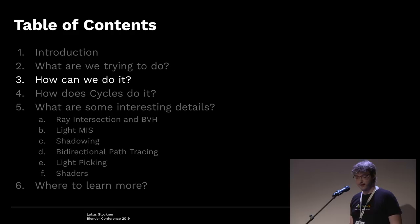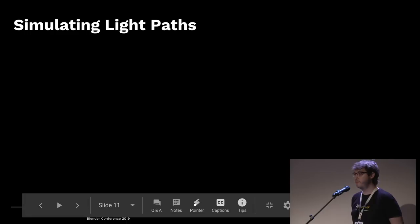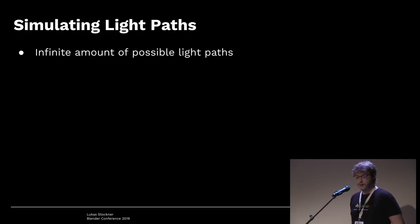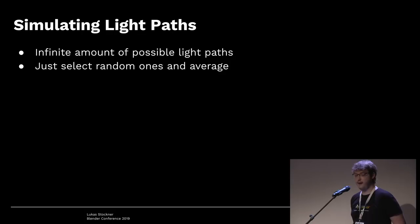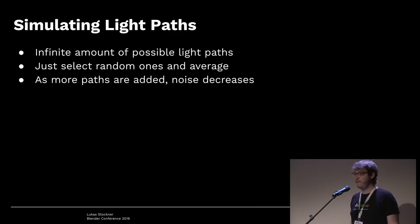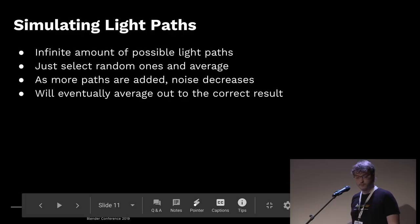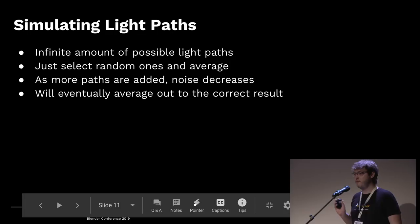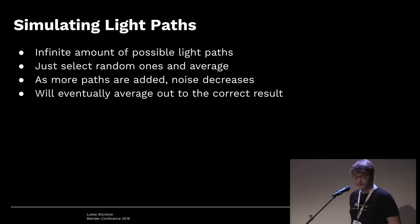So we want to simulate geometric optics. Geometric optics has this concept of light paths — light moves along straight lines. There are an infinite number of possible light paths so we can't simulate all of them. Instead, we select a lot of random light paths and average over them. Each path will hopefully hit the camera at some point, and if we average over billions of them, we end up with a rendered image. This is known as unbiased rendering, though the unbiased/biased distinction is extremely complex.